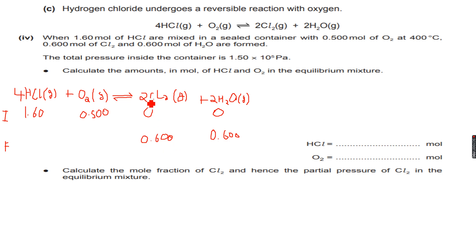If I have 0.6 moles of Cl2 that have formed, that means the ratio between HCl and Cl2 is 2 is to 1, because 4 is to 2 is the same as 2 is to 1. So if 0.6 moles of Cl2 have been formed, that means 1.2 moles of HCl had reacted. Because 1.2 divided by 2 is 0.6, so 1.2 moles of HCl reacted to give me 0.6 moles of Cl2 and 0.6 moles of H2O.